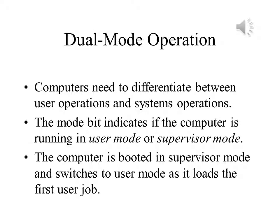There are two types of operations that computer systems do. User operations, where they are performing the tasks that users have programmed them to do. And system operations, where they are performing the tasks that enable users to do the things that they want to do.